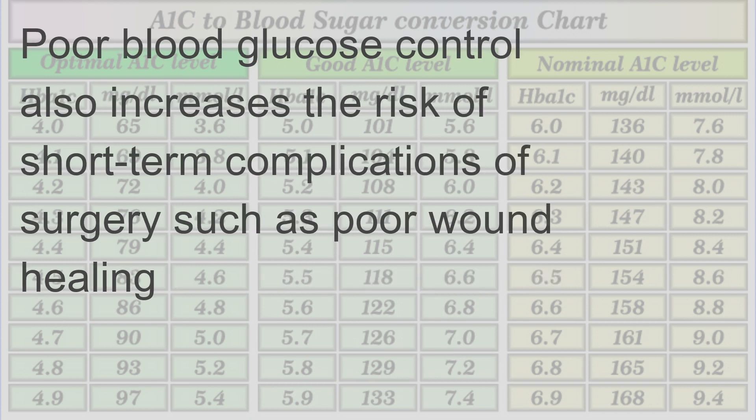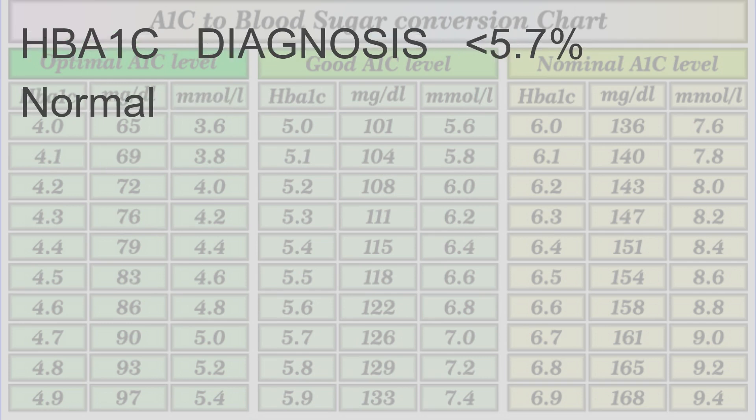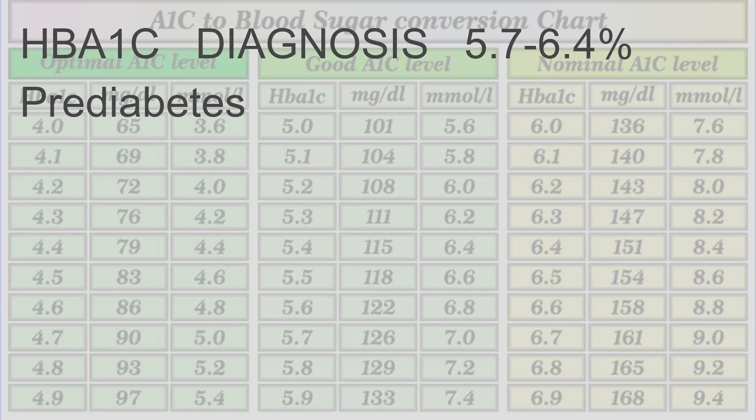Poor blood glucose control also increases the risk of short-term complications of surgery, such as poor wound healing. Diagnostic standard for HbA1c in diabetes: HbA1c less than 5.7% is considered normal; HbA1c of 5.7 to 6.4% indicates pre-diabetes.